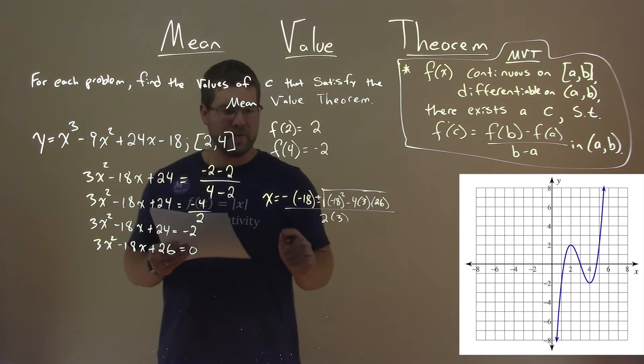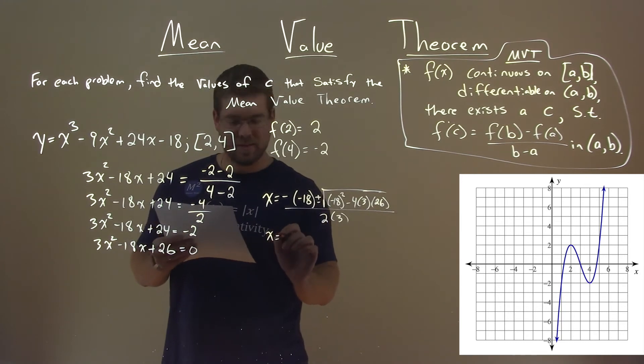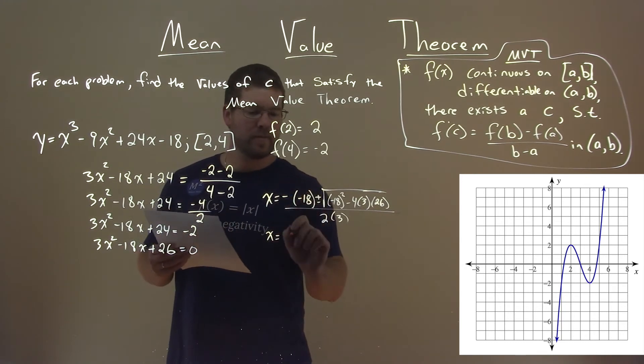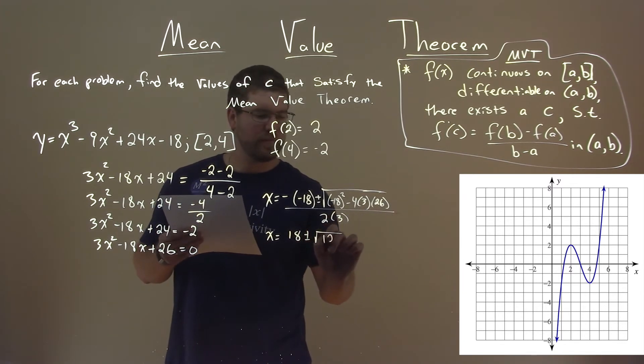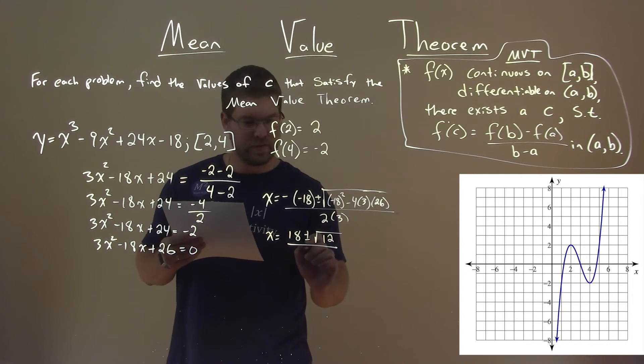Now, hopefully you know how to use the quadratic formula, but I'll simplify this out some for you. Negative negative makes a positive 18 plus or minus the square root, and the inside comes out to be a 12. All over 2 times 3 is 6.